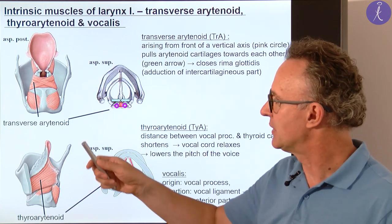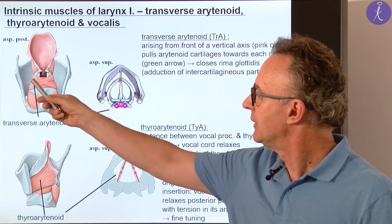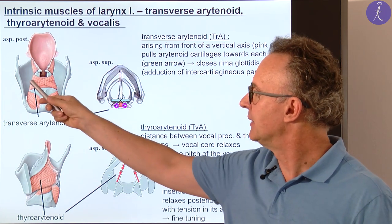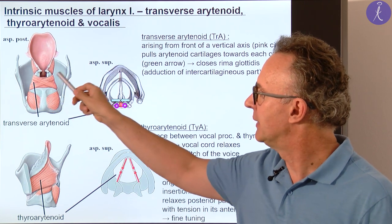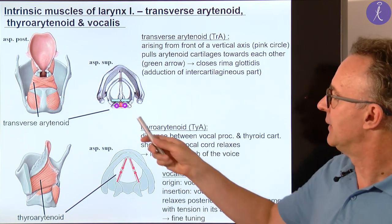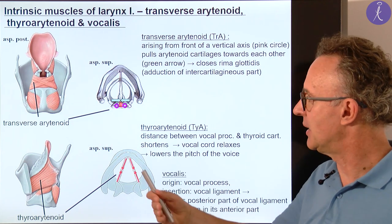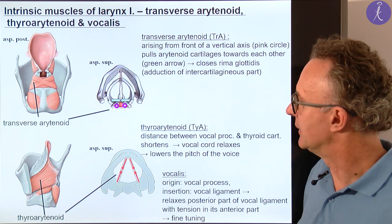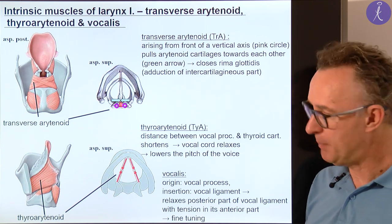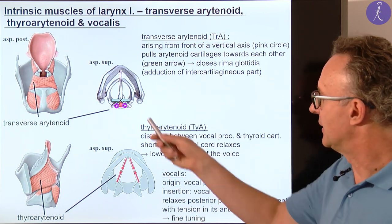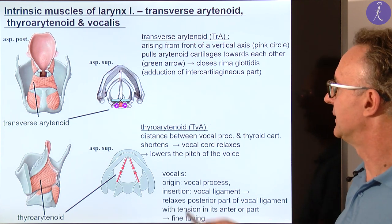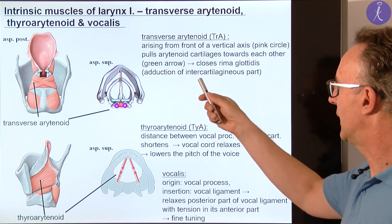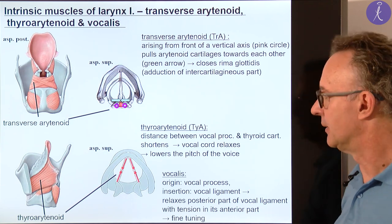That's why we need another muscle for closure of the posterior part. The arytenoid muscle has two parts: the transverse, deeply located, and the oblique in an X-shape. The transverse part especially is able to slide the two arytenoid cartilages closer to each other, closing the posterior gap. This is important for vocalization, and it closes the so-called intercartilaginous part of the rima glottidis.